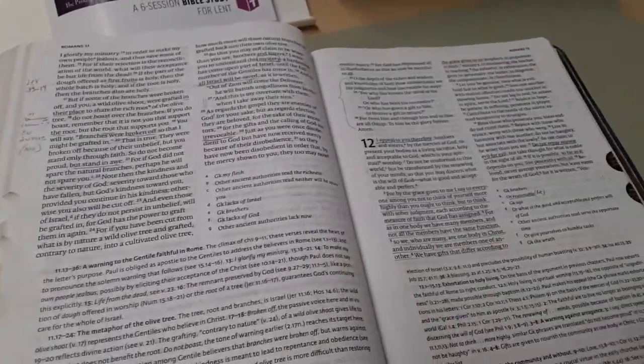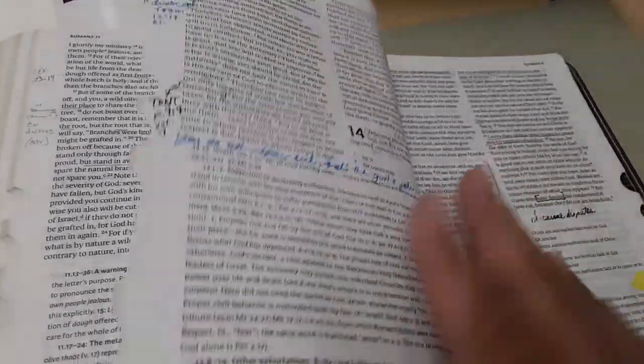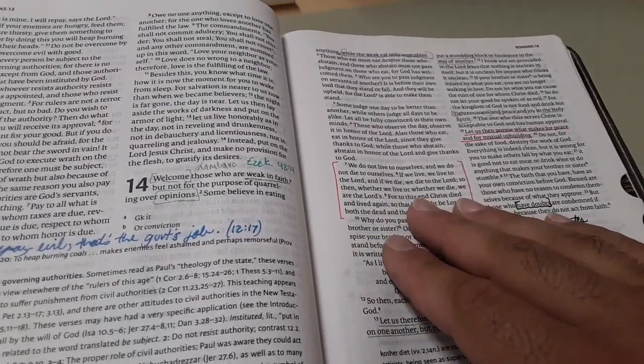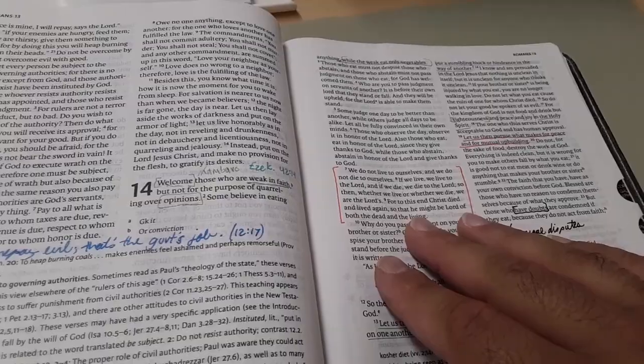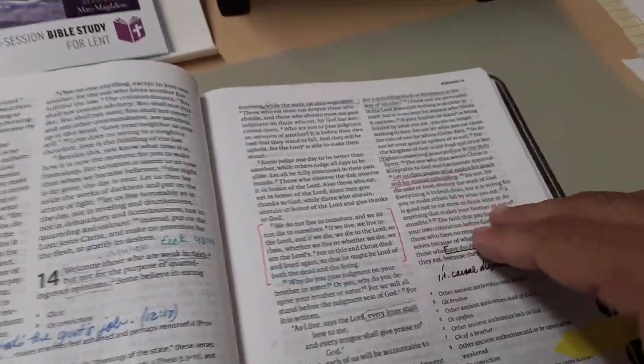All right. Once more, one more, then we'll go from there. Here's some blue. All right. So this is peacemaking. We do not live to ourselves, whether we die or whether we live, we are the Lords. And then let us then pursue what makes for peace and mutual upbring. So that's peacemaking.